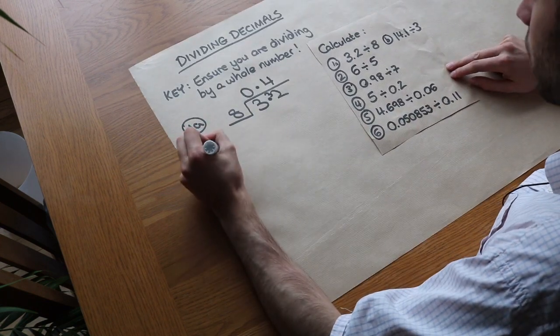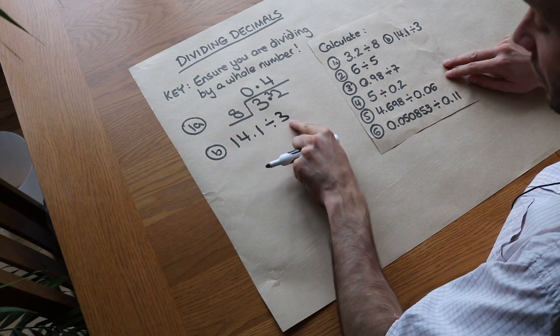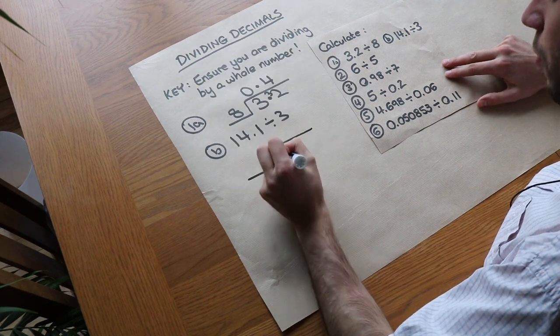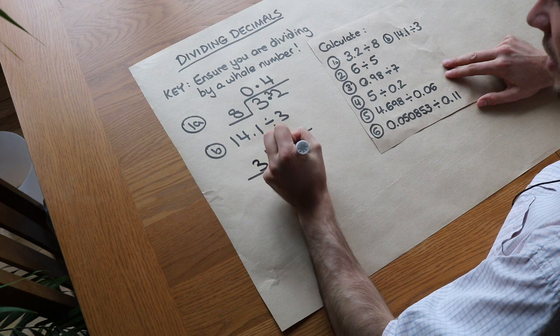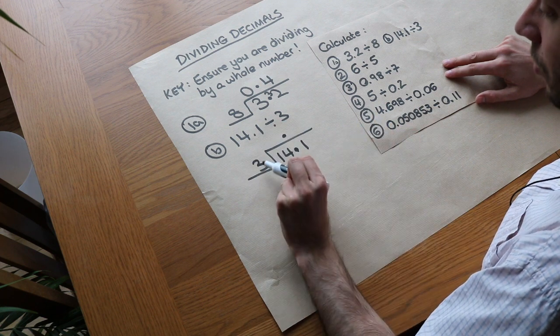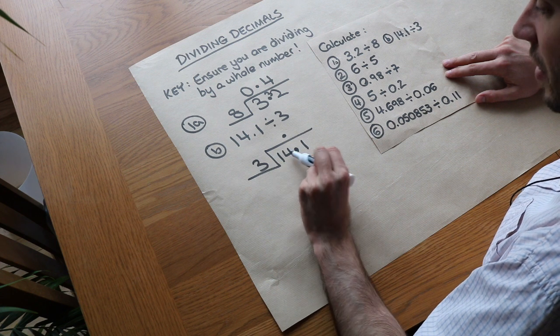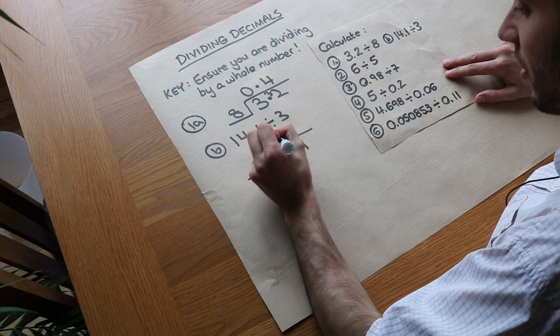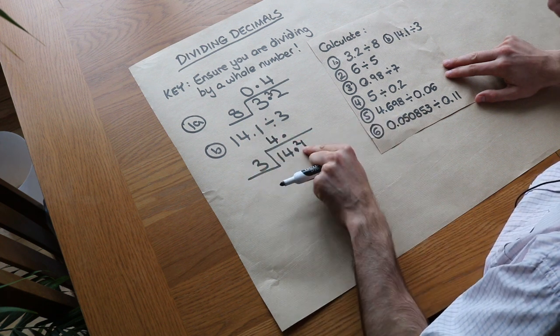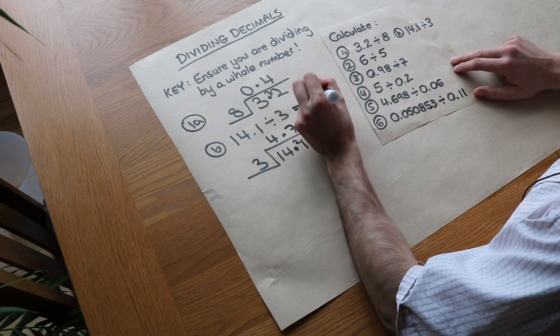What about the second one? We've got 14.1 divided by 3. So we do exactly the same thing. We're dividing by a whole number so that's okay, that satisfies our rule. So we do 14.1 divided by 3. We put the decimal point in the same place in the result, and then we do, well, how many times does 3 go into 1? You can't do it, but you could do 3s into 14, which goes 4 times with a remainder of 2. So we put the remainder of 2 here. Then how many times does 3 go into 21? It's 7 times, and so we get a result of 4.7.